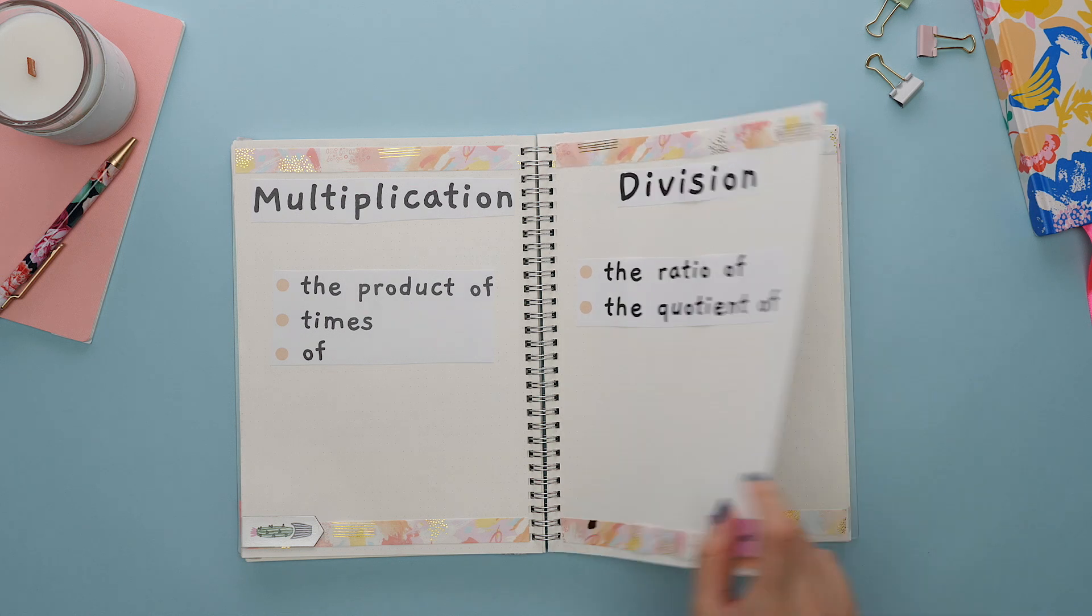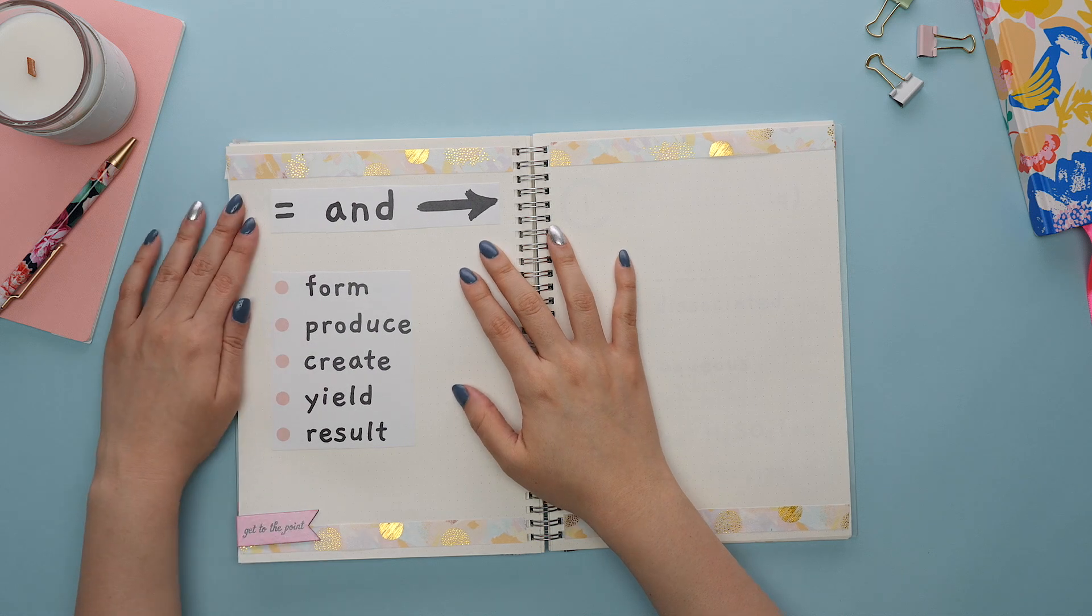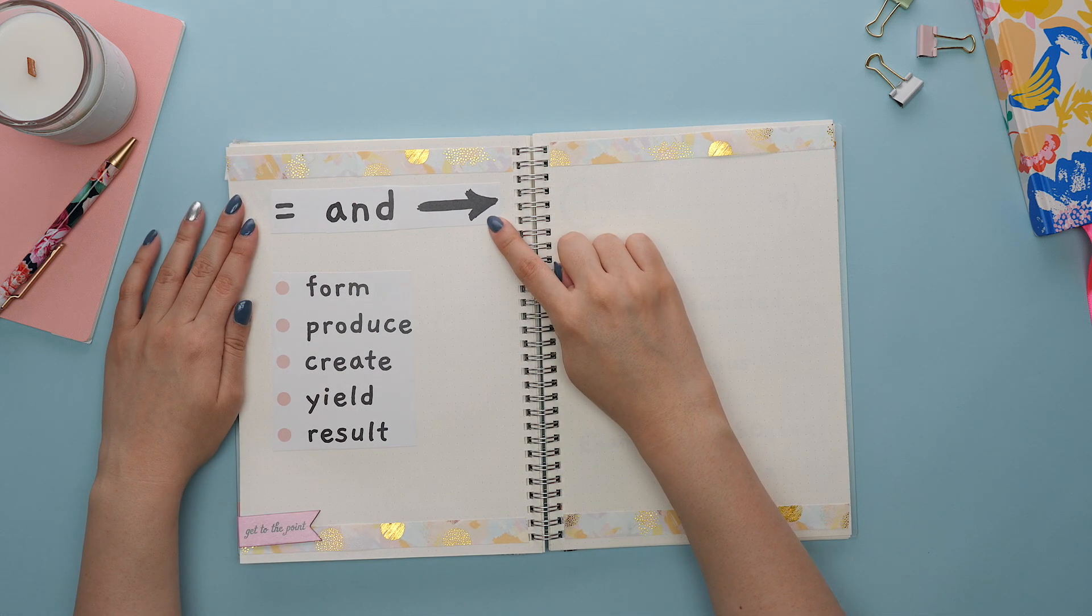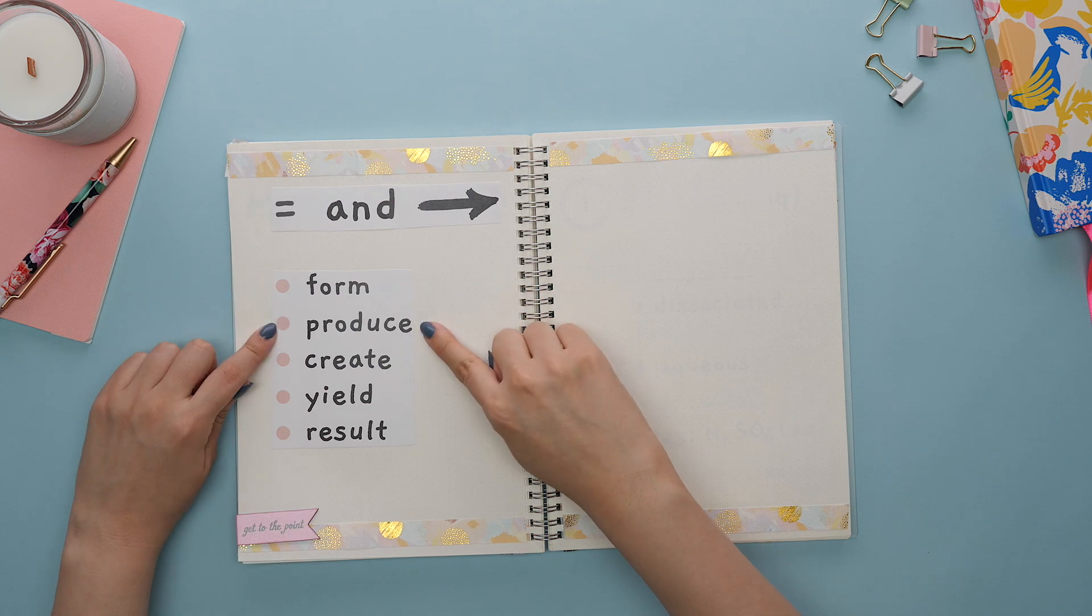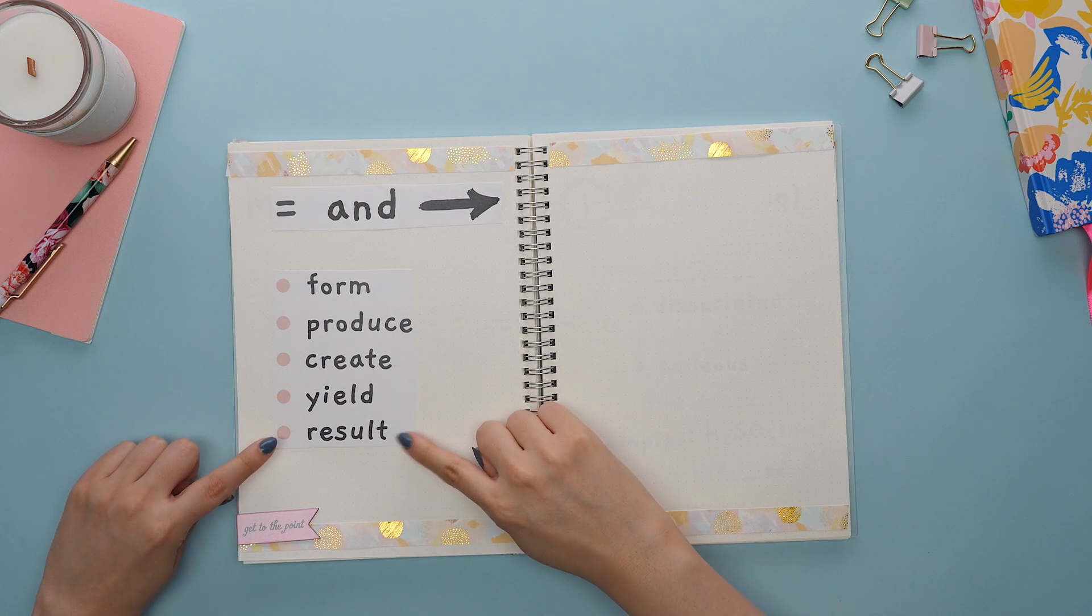Let's not forget about the words that refer to an equal sign, and in some questions, the arrow in a chemical equation. These words are form, produce, create, yield, and result.